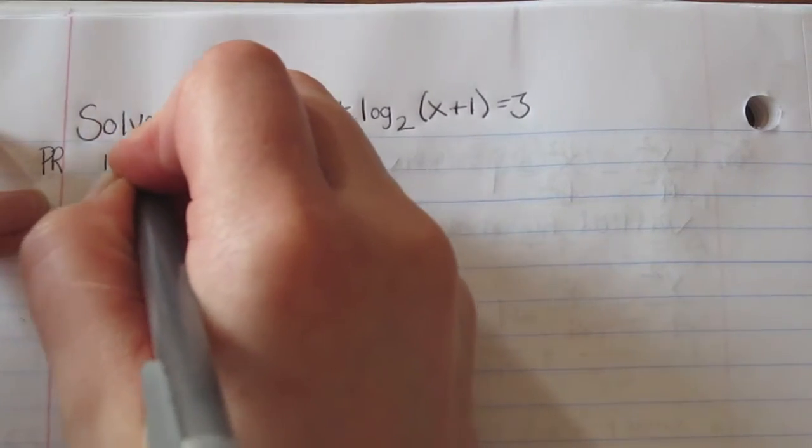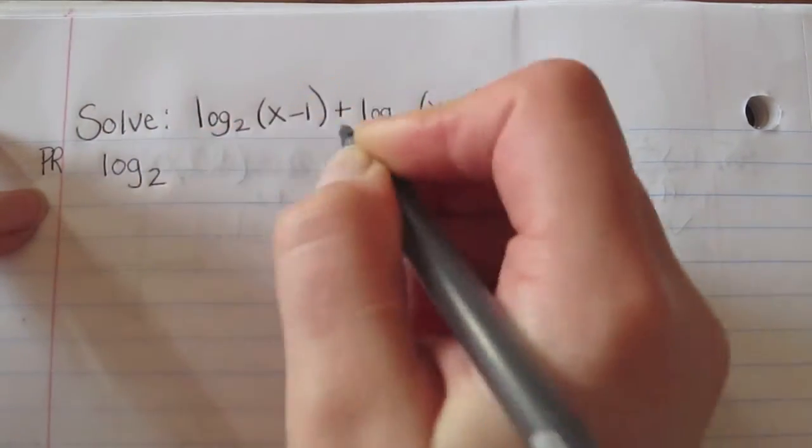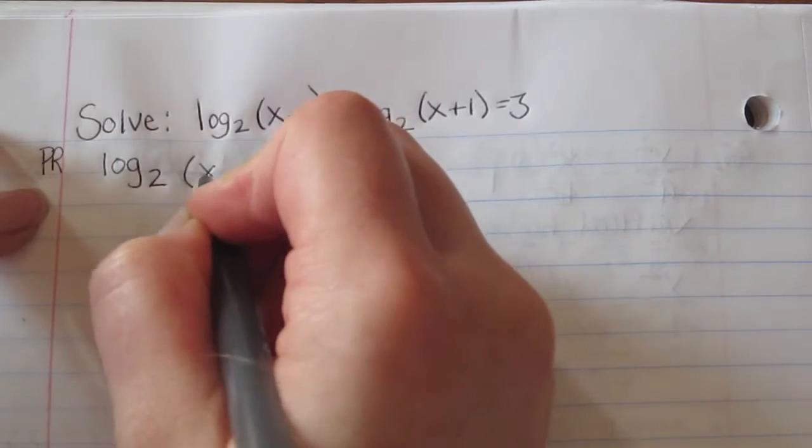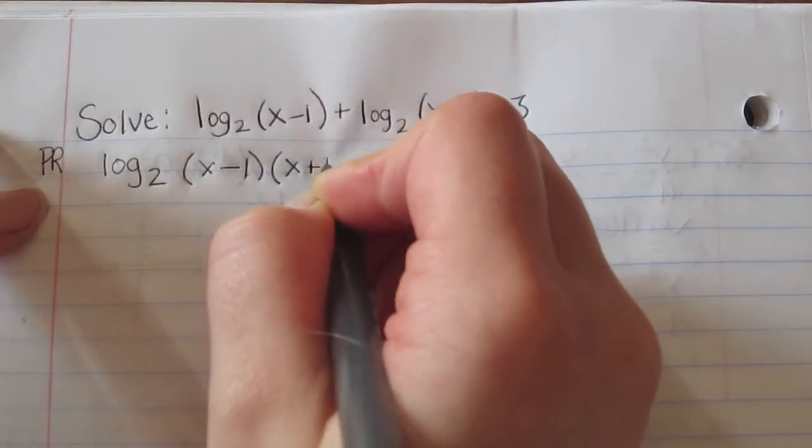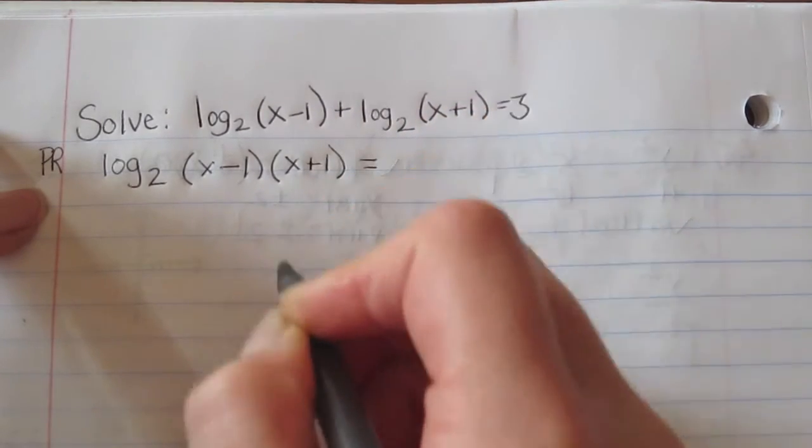So it's going to be log base 2 of (x minus 1) times (x plus 1), and that's going to equal 3.